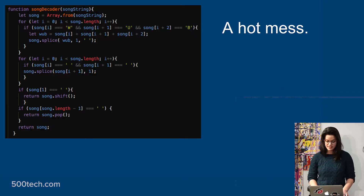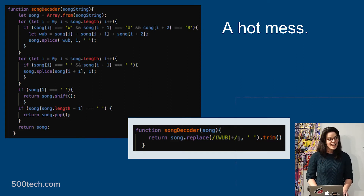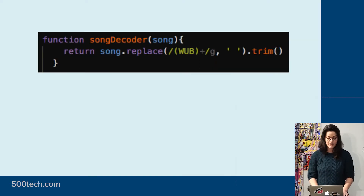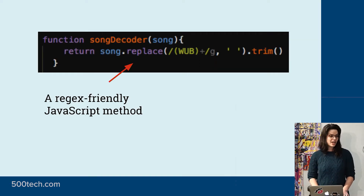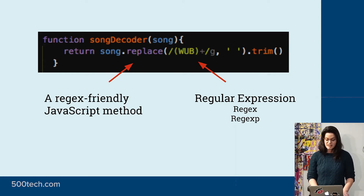My code looked kind of like this, and the top solution looked like this. It was a single line of code and half of it looked like black magic. I went through an existential crisis and assumed I would never become a coder and should give up now. But it was just two things I hadn't seen before: a regex-friendly JavaScript method and a regular expression, sometimes called regex or regexp. And it really wasn't that scary at all — I just didn't recognize it.